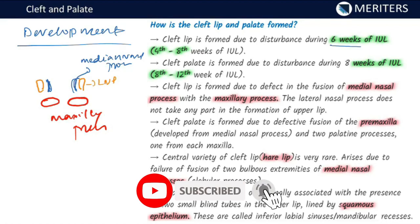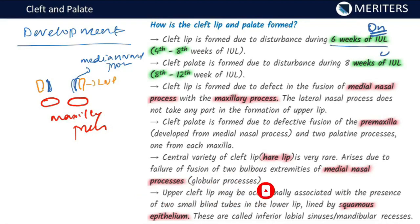These are frequently asked exam questions. Cleft lip is formed due to a disturbance during the sixth week of intrauterine life — that is between the fourth and eighth week. The cleft palate is formed a little later, due to disturbance occurring during the eighth week of intrauterine life, that is between the eighth to twelfth week.